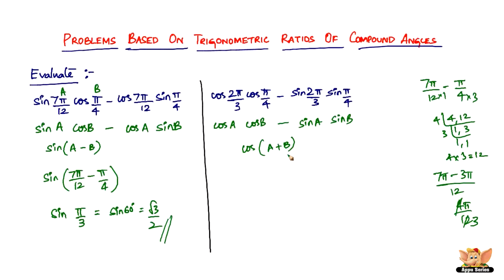We have to just substitute, so cos of 2π by 3 plus B is π by 4. So solving which you get cos of 11π by 12.